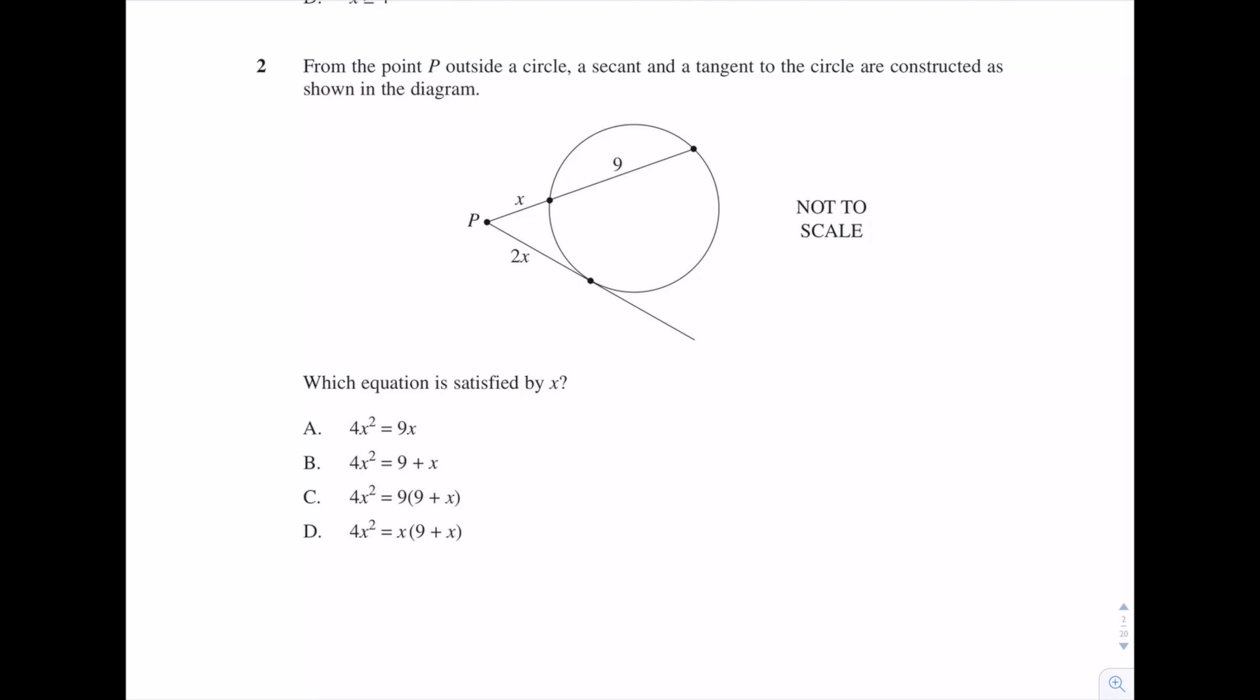Question 2: From the point P outside a circle, a secant and a tangent to the circle are constructed as shown in the diagram. Which equation is satisfied by x? Okay, for this question let's just label these points A, B and C and then this is a straight application of a circle geometry theorem.